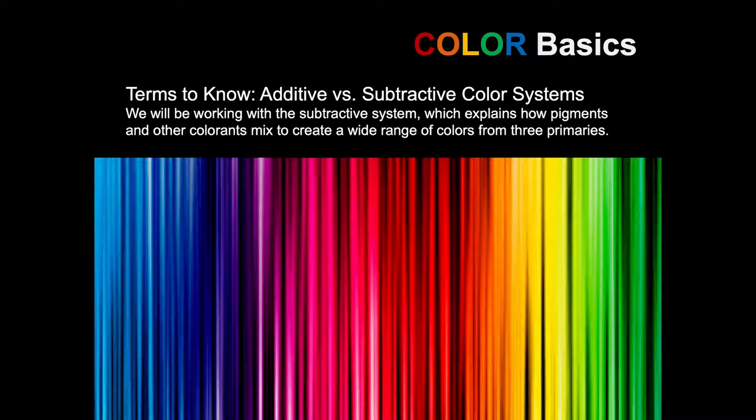The additive system is a system that you may use if you ever work with theater lighting or lighting design in general. It works by adding various wavelengths of pure light to achieve the colors. Since the subtractive system is much more familiar to most of us, and all the principles of color theory are the same for both systems except how the colors are mixed from primaries, we will start by using the subtractive system.